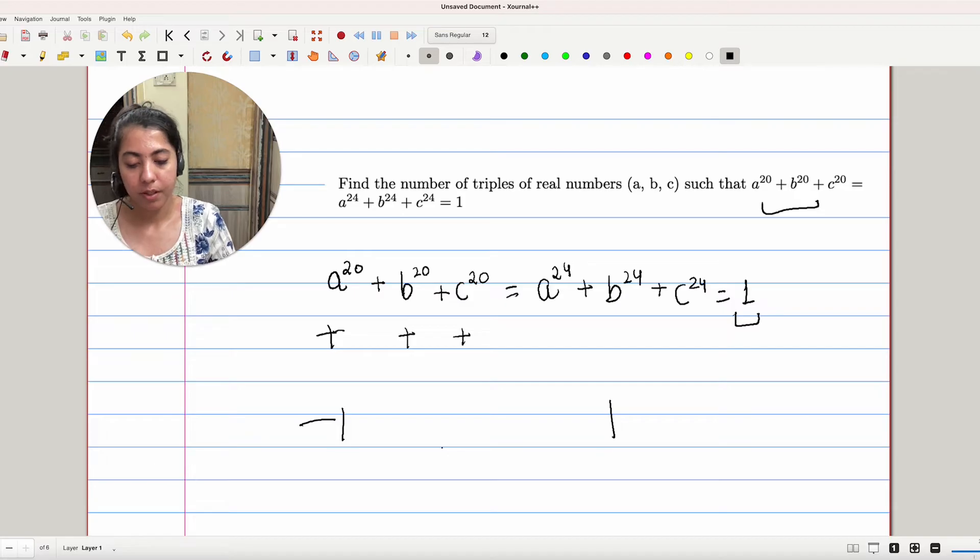Why so? Because if we had some odd powers, we have the possibility of subtraction. But since these are even powers, they will always be numbers that are positive and they add up to 1. So we can say that a, b, c can lie between minus 1 and 1.